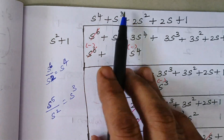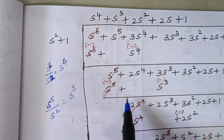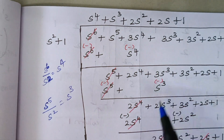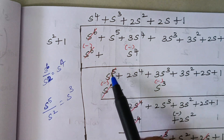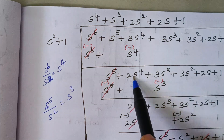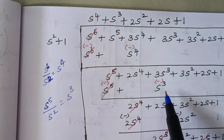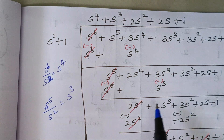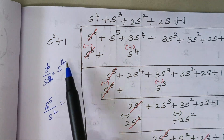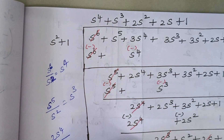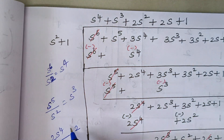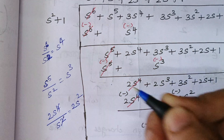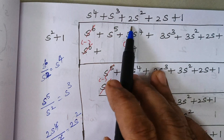Again we have to multiply: S³ × S² gives S⁵, and 1 × S³ gives S³, written under the S³ term. On subtraction, those terms cancel and 3S³ minus S³ gives 2S³; the remaining terms are written as such. Next, the first term is 2S⁴ and the divisor first term is S², so 2S⁴ divided by S² gives 2S². So our third term is 2S².